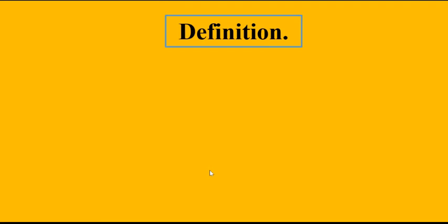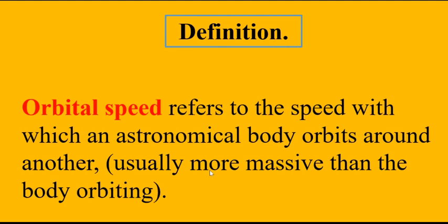What is the meaning of orbital speed? This refers to the speed with which an astronomical body orbits around another. Usually the smaller body is the one that orbits the massive body.